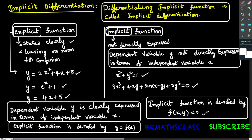Let me conclude. Explicit function is a function in which y is stated clearly in terms of x — you can observe the three examples where dependent variable y is expressed clearly in terms of x. Implicit function is a function in which dependent variable y is not directly expressed in terms of x. If you observe the two examples, you can understand that y is not stated clearly in terms of x. It's very simple — I hope you understand this class.